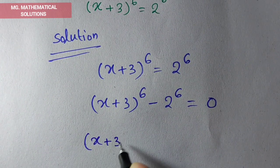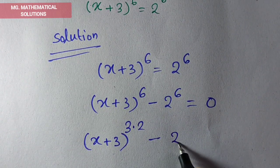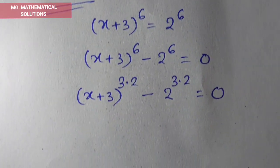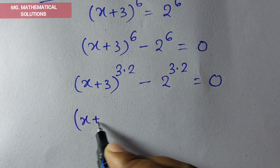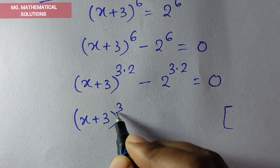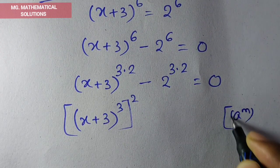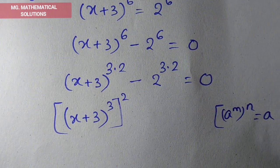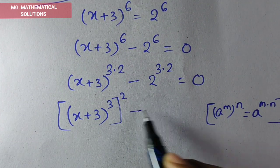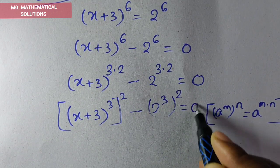We rewrite the exponent 6 as 3 times 2. So (x + 3) to the power 3×2 minus 2 to the power 3×2 equals 0. Here we use the formula a^m whole to the power n equals a to the power m×n. Applying that formula gives us [(x+3)^3]^2 minus [2^3]^2 equals 0.